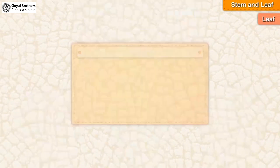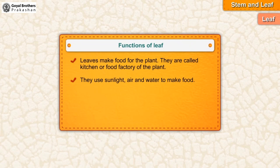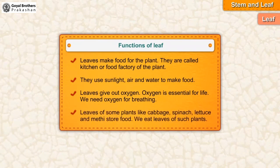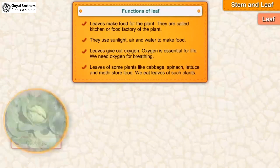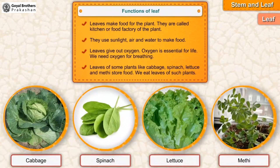Functions of a leaf: leaves make food for the plant and are called the kitchen or food factory of the plant. They use sunlight, air, and water to make food. Leaves give out oxygen, which is essential for life — we need oxygen for breathing. Leaves of some plants like cabbage, spinach, lettuce, and methi store food, and we eat leaves of such plants.